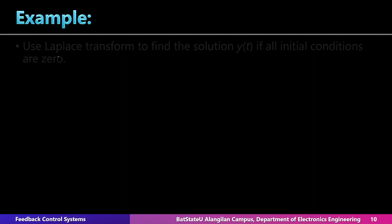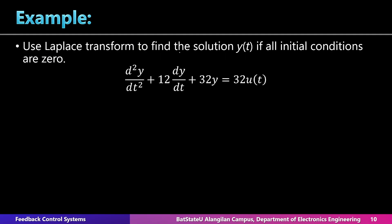Let us solve the first example. Use Laplace transform to find the solution y(t), if all initial conditions are zero. Here we have a second order linear differential equation with constant coefficients, and we can use Laplace transform to obtain the solution y(t). Let us first analyze the equation. The dependent variable is y, which represents the solution — the response of the system we are looking for.